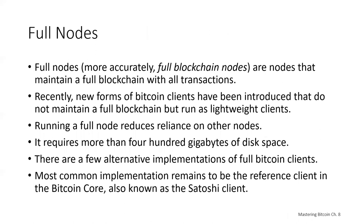Full nodes are nodes that maintain a full blockchain with all transactions — more accurately they should be called full blockchain nodes. In the early years of Bitcoin, all nodes were full nodes, and currently the Bitcoin Core client is a full blockchain node. In recent years, new forms of Bitcoin clients have been introduced that don't maintain a full blockchain but run as lightweight clients.